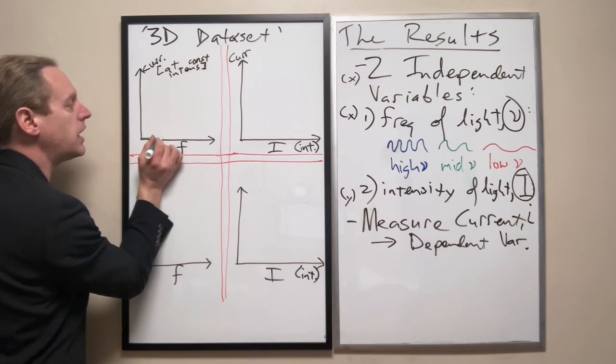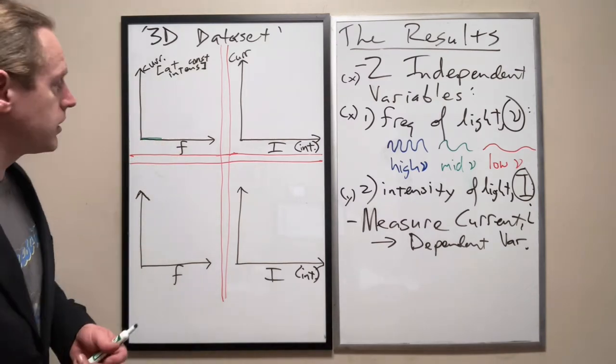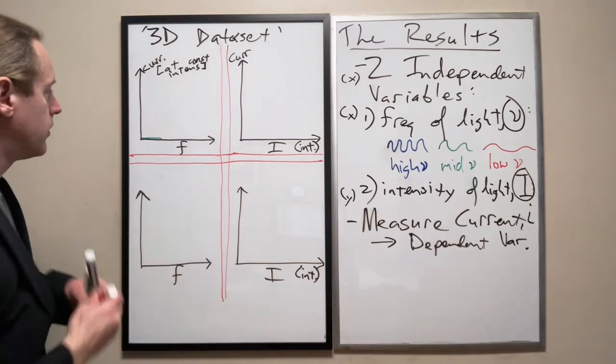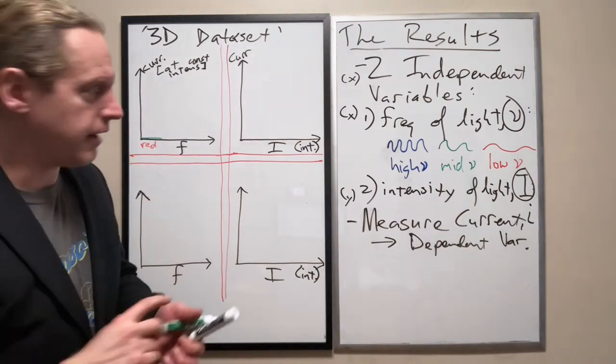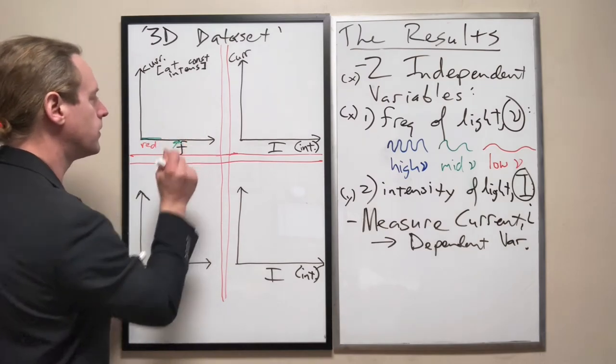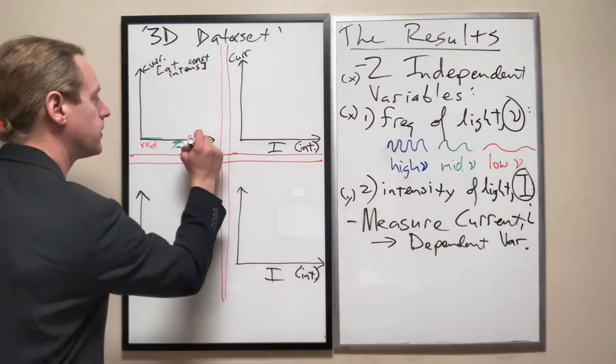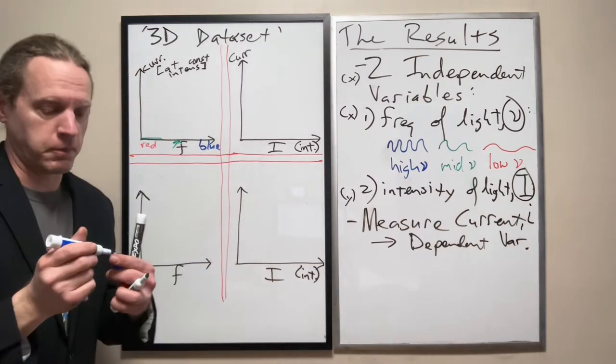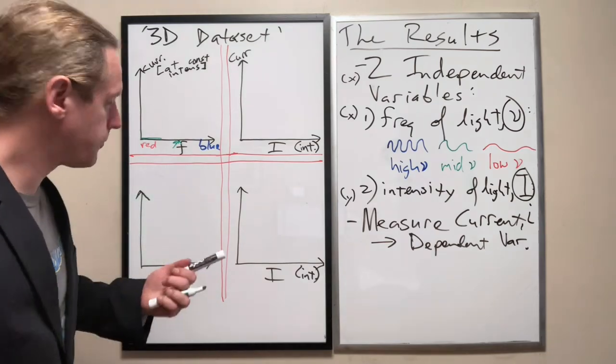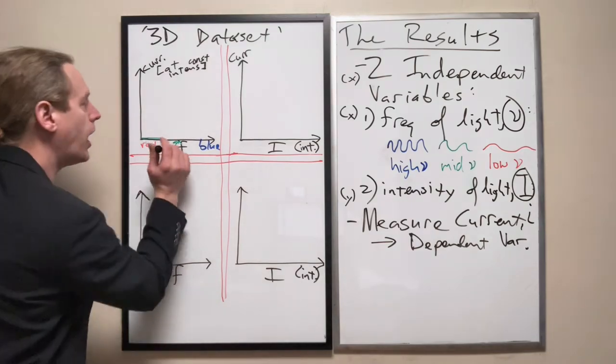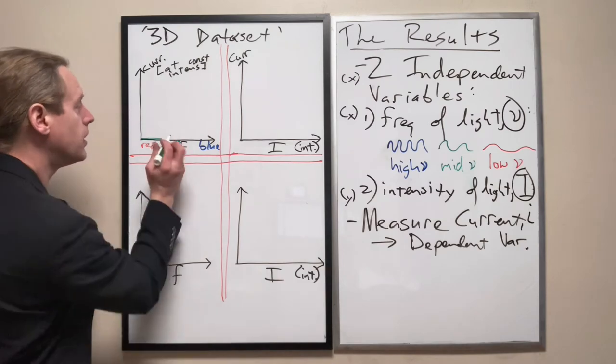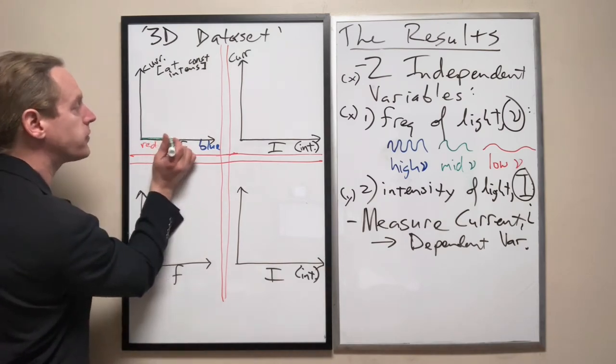So if we measure that at a constant intensity, and the only thing we change is the frequency, what we find is that when we start actually seeing the light, when it's in the infrared, and then even the red, we're not actually seeing any current at all. We don't have any current.